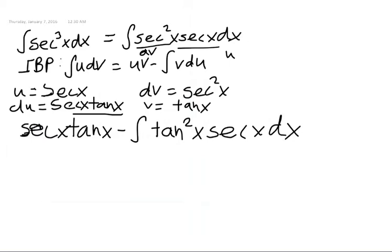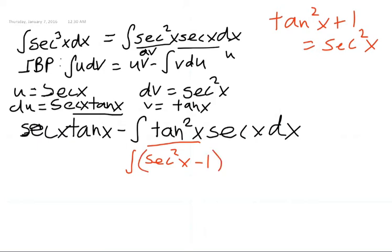And now what you have to do is you have to remember that tan squared of x plus 1 is equal to secant squared of x, which means secant squared of x minus 1 is equal to tangent squared. So we're going to replace this tangent squared with a secant squared x minus 1, and that's going to be in parentheses, times secant of x dx.